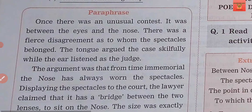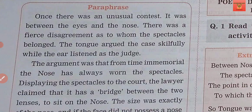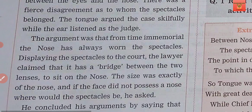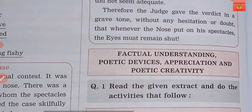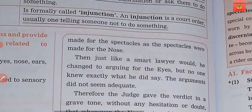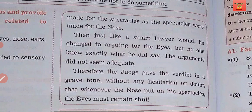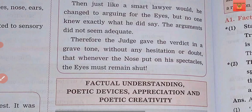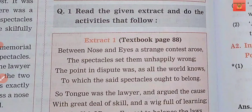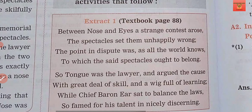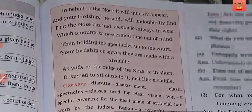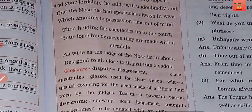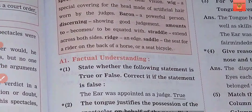Next is paraphrase. In paraphrase, there is a general explanation of what you want to say. You will also see an extra page, page number 88. This poem is a little lengthy, so it has been divided into two parts, and you will get questions accordingly.